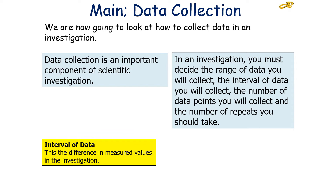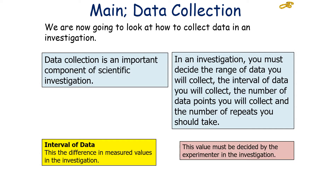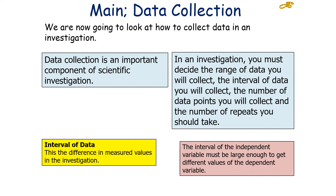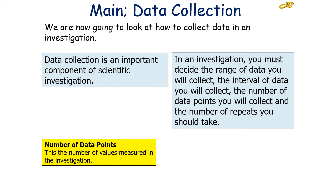Another thing you've got to decide is the interval of data — the difference between the measured values in an investigation. Once again you have to decide this value as the experimenter. The interval of the independent variable must be large enough to get different values for the dependent variable.